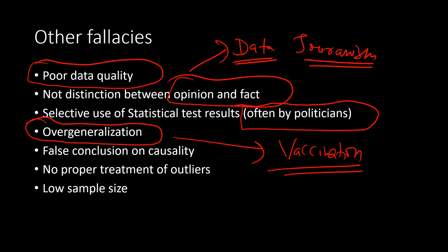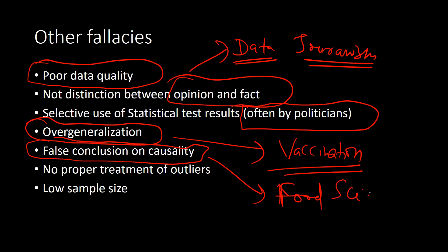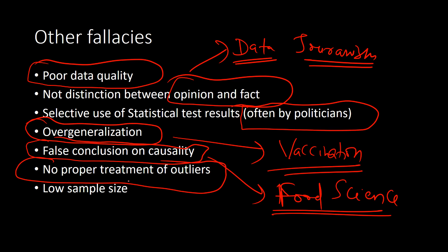False conclusions on causality are a big problem in social science and data journalism, where journalists conclude causality where none exists. This is also heavily misused in food science and all social sciences. No proper attention is paid to outliers — another big problem, especially among non-specialists. They either completely remove outliers or keep them in the analysis, and both approaches can bias the results without proper treatment.